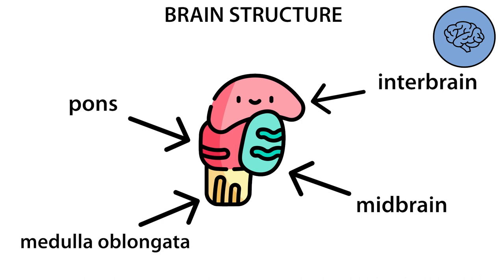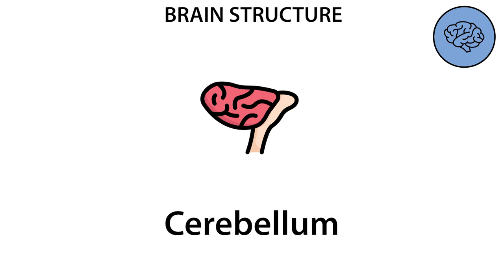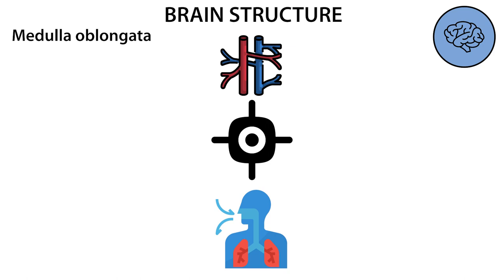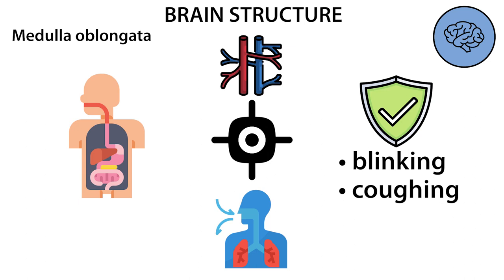Sometimes the cerebellum is also included in the brainstem. In the medulla oblongata, there are centers of reflexes providing blood circulation, respiration, digestion, and centers of protective reflexes: blinking, coughing, vomiting, sneezing.